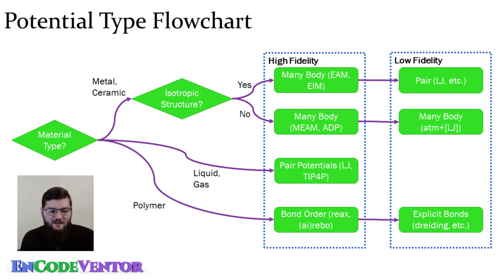The high fidelity ones would be something like NEM or ADP and there's certainly others. A low fidelity one would be a hybrid potential where you're combining a simple many body term like ATM and lamps with a pair potential like Leonard Jones.